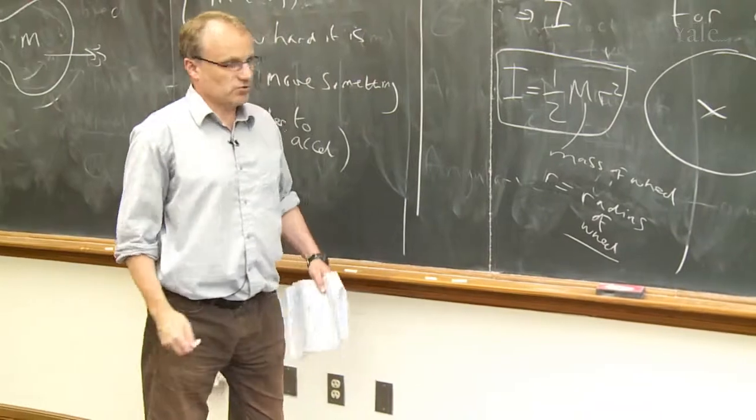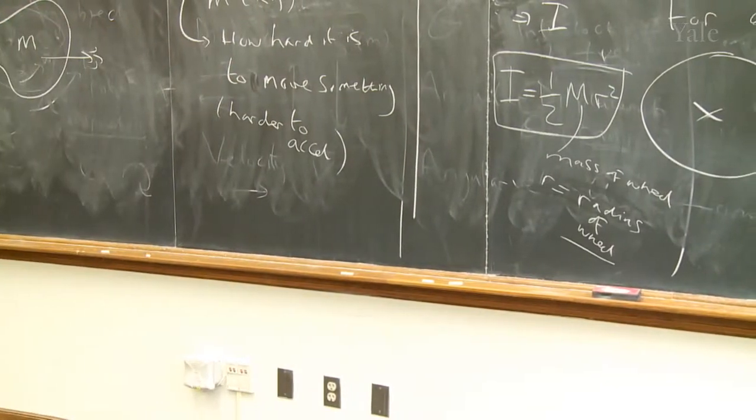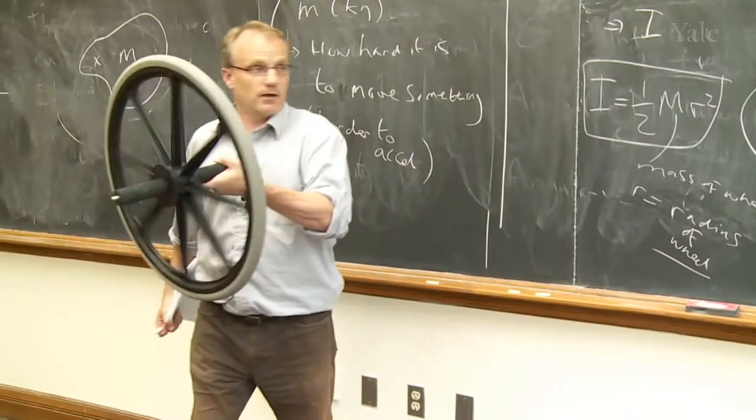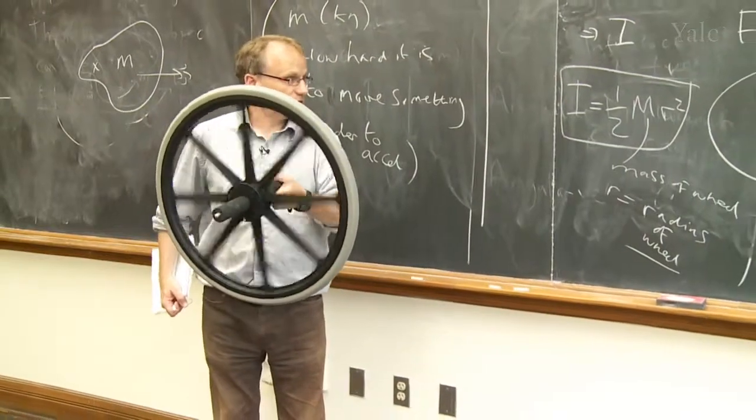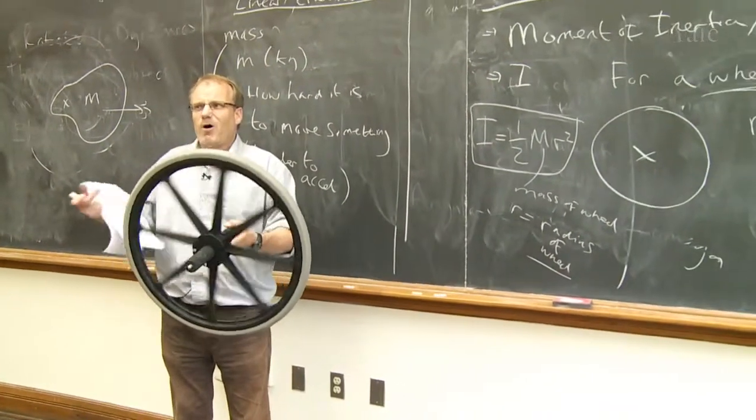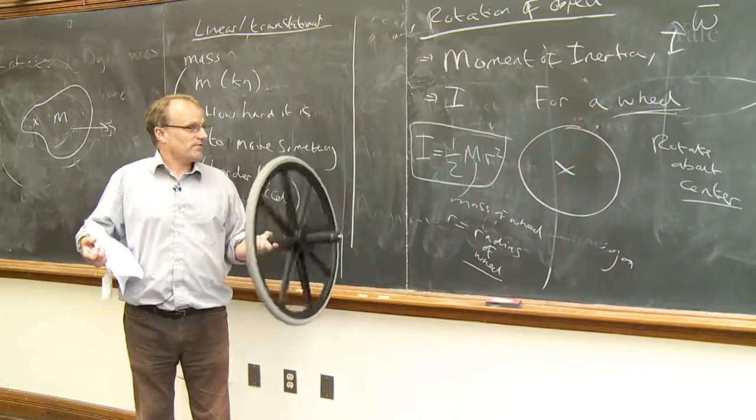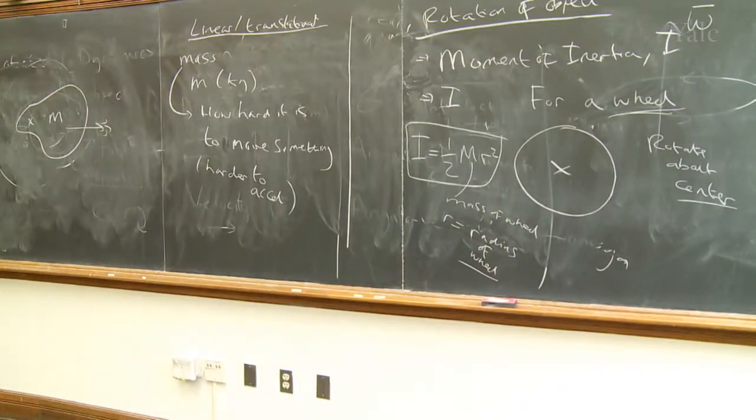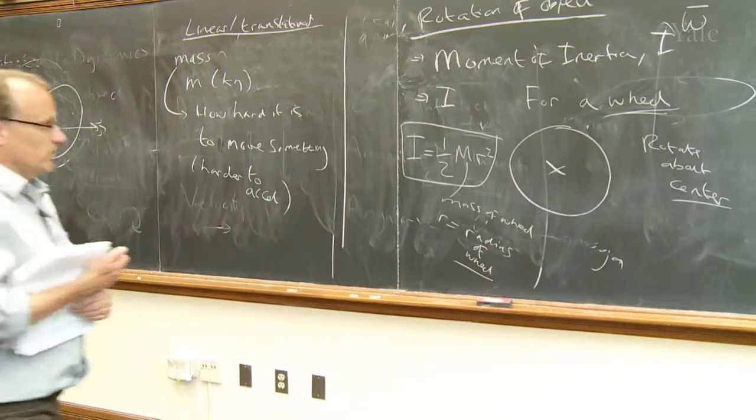So if I try to spin this wheel about the center, the moment of inertia, the difficulty of how hard it is for it to spin about its center, is a half m r squared. But if I try to rotate this wheel about this point...